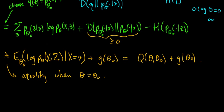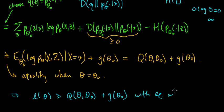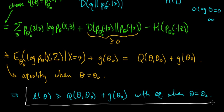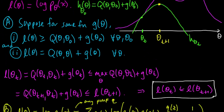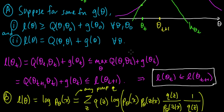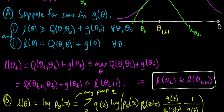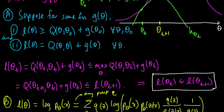And so, therefore, we have L of theta greater or equal to q theta theta naught plus this function g of theta naught with equality when theta equals theta naught. And that's exactly what we wanted to prove in Part B to ensure that these conditions held for Part A to be valid. So that proves the proposition.